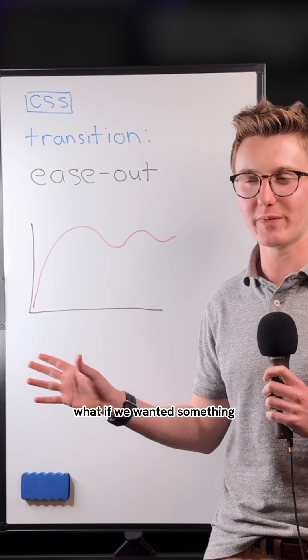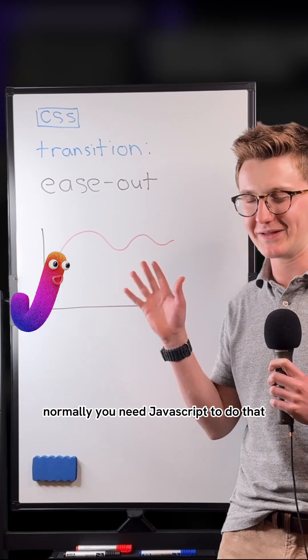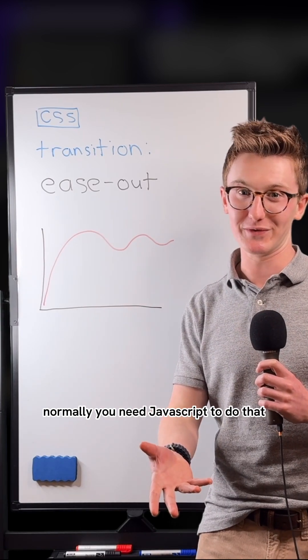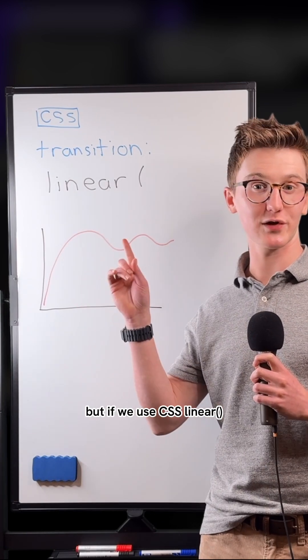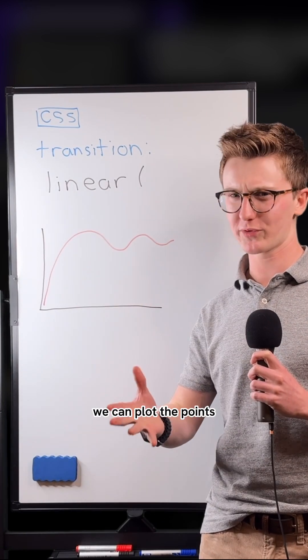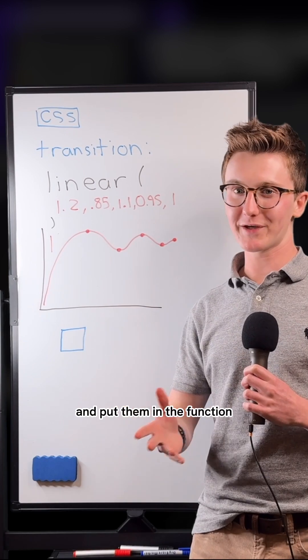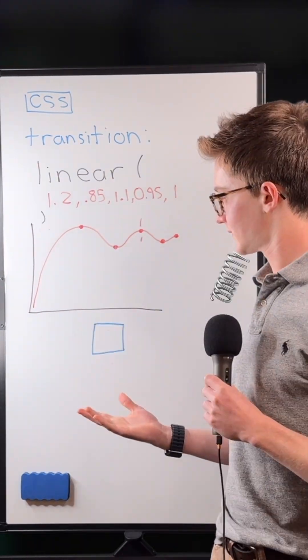What if we wanted something a little bit more wiggly? Normally you'd need JavaScript to do that, but if we use CSS linear, we can plot the points and put them in the function. Then we can step through the points.